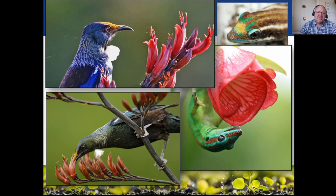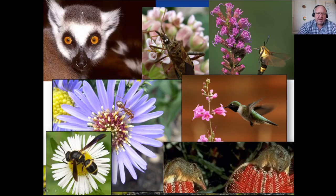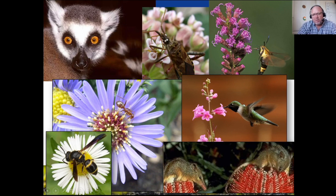What about other weird and wonderful pollinators? Here we have pollination by lemur - they actually pollinate some of the flowers in Madagascar. Pollination by beetle, stink bug, pollination by moth, and the hummingbird - which is amazing. The smallest hummingbird is about the size of a big wasp. And talking about wasps, wasps will also pollinate. Ants will pollinate because they're after the nectar, which contains a lot of sugars.